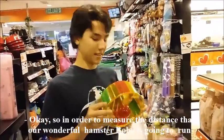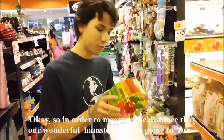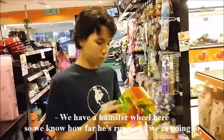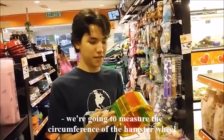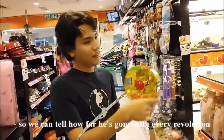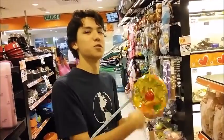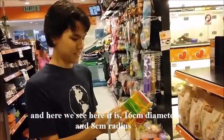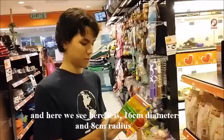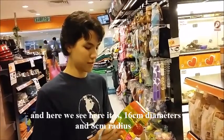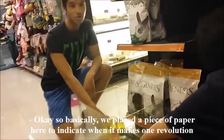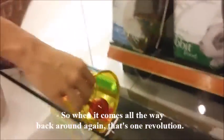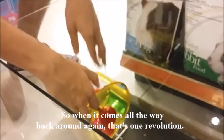Okay, so in order to measure the distance that our wonderful hamster Roborow is going to run, we have our hamster wheel here. And so we know how far he's running, we're going to measure the circumference of the hamster wheel so we can tell how far he's gone with every revolution. And, see here it is, 16 centimeters diameter. And so it's got an 8 centimeter radius. Yeah. Okay, so basically we placed this piece of paper here to indicate when it makes one revolution. So when it comes all the way back around again, that's one revolution.